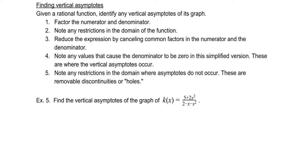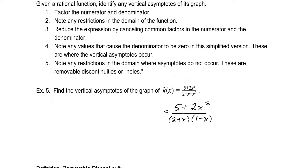For K of x equals (5 + 2x squared) over (2 minus x minus x squared): the numerator does not factor, but the denominator factors as (2 + x)(1 minus x). The values making the denominator zero are x equals negative 2 and x equals 1. Because neither of those terms canceled, we have vertical asymptotes at x equals negative 2 and x equals 1.